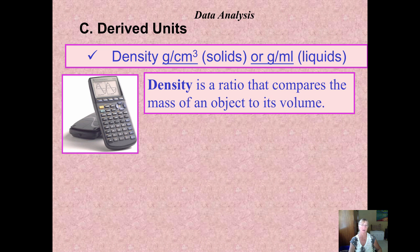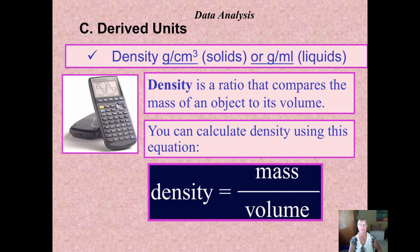Density is a ratio that compares the mass of an object to its volume. To get density, I'm hoping that you've seen this before in a previous class, we simply take the mass and divide it by the volume.